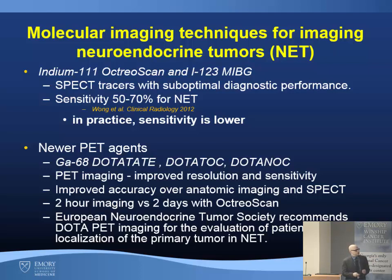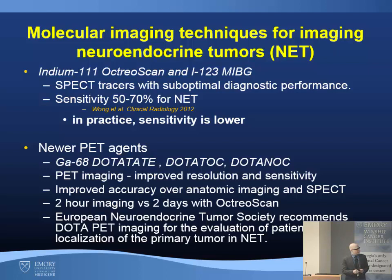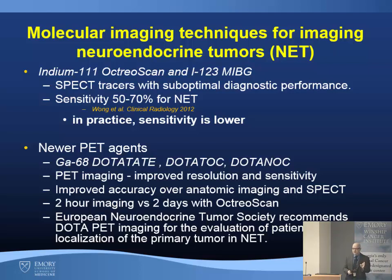These are SPECT tracers with suboptimal diagnostic performance. The sensitivity in the literature is about 50 to 70 percent, but in practice it is actually lower. Now there are newer PET agents available, including gallium-68 dotatate, dotatoc, and dotanoc — basically all variations on a theme. With PET imaging we have improved resolution, sensitivity, and improved accuracy over anatomic imaging and the single photon tracers. After injecting the patient you wait about an hour, so the whole process takes two hours, versus typically two days for octreoscan and MIBG.